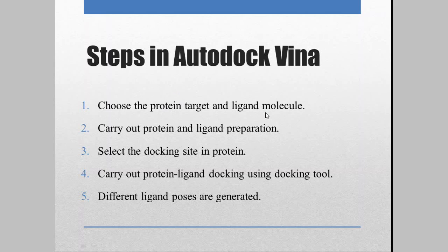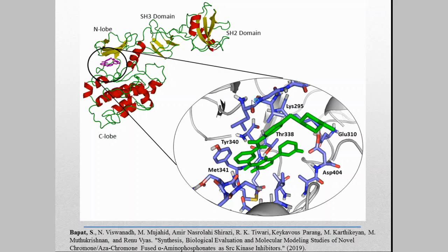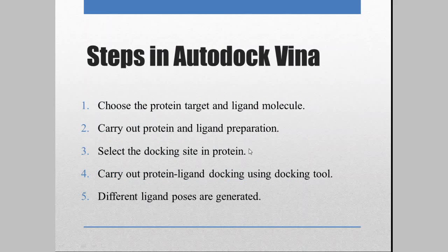After you know your protein target and ligand molecule, next you carry out the preparation step — you prepare both the protein and ligand for docking. The third step is to select the docking site, which is the region in the protein where your ligand will bind. The fourth step is you carry out the protein-ligand docking using a docking tool — in our case, AutoDock Vina. There are many other docking tools like Glide from Schrödinger, GOLD, and FlexX. Last is you generate different ligand poses using docking.